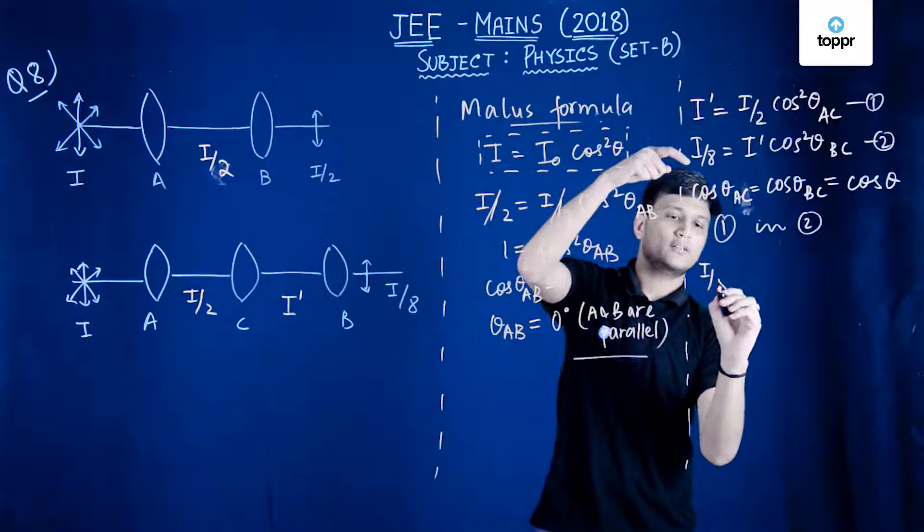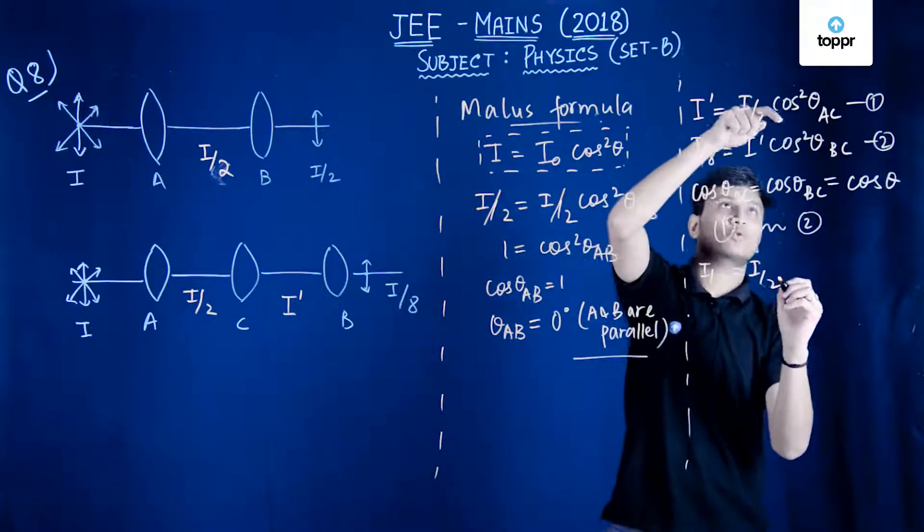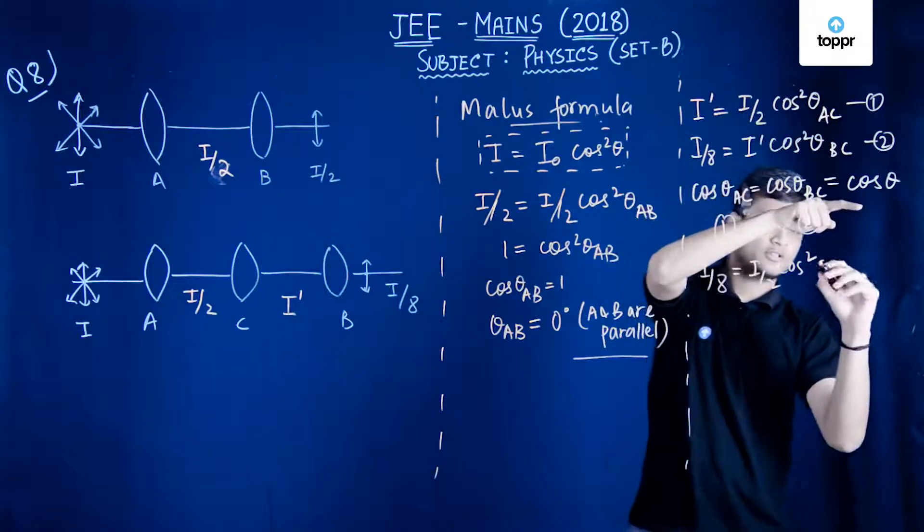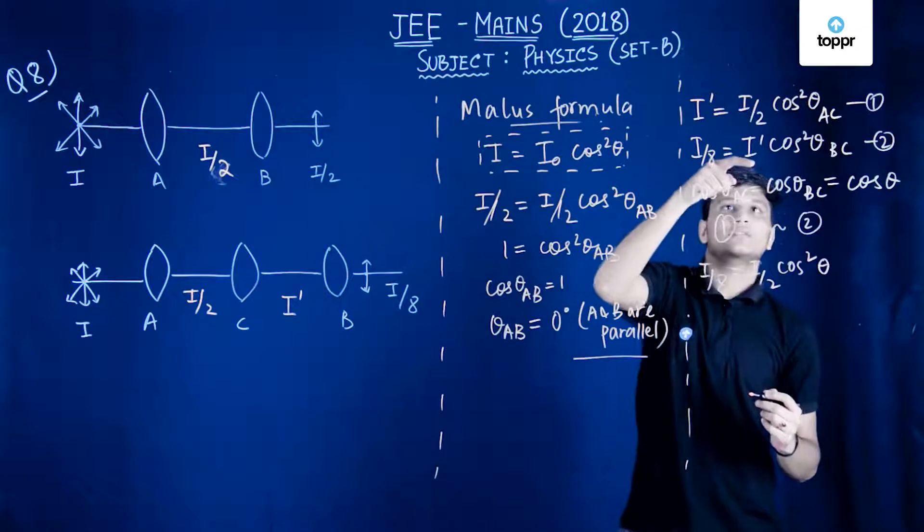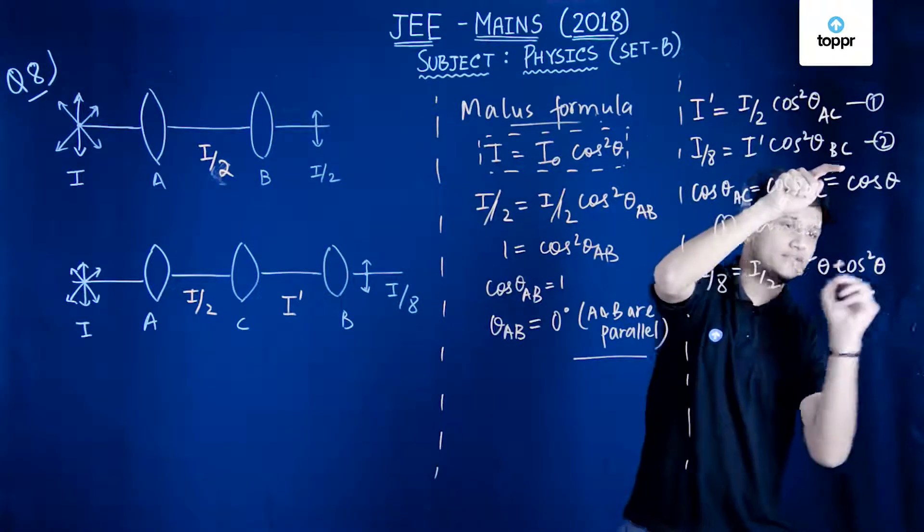So I by 8 would be equal to I dash. I dash is I by 2 cos square theta AC is nothing but cos theta. This is I dash, and another cos square theta BC is theta again.